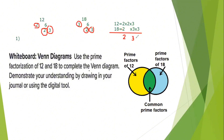First, write the common numbers in the intersecting area. So I will put 2 and 3 in the middle. From the prime factors of 12, I wrote 2 and 3 in the middle, so the remaining 2 goes in the left area. For the prime factors of 18, I wrote 2 and 3 in the middle, so the remaining 3 goes in the blue area on the right.